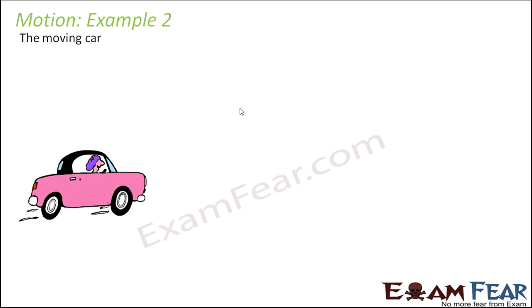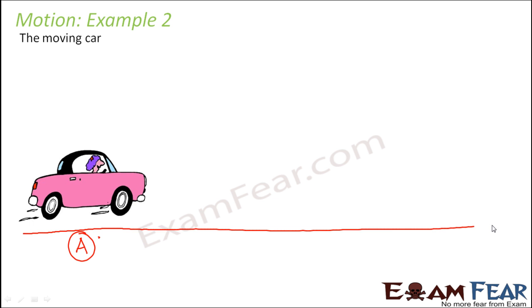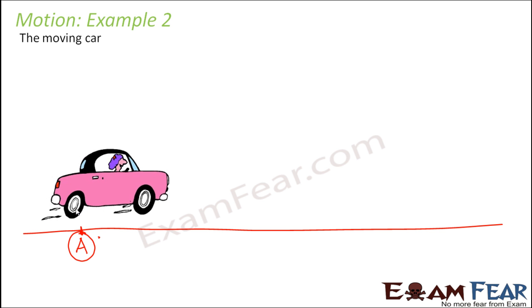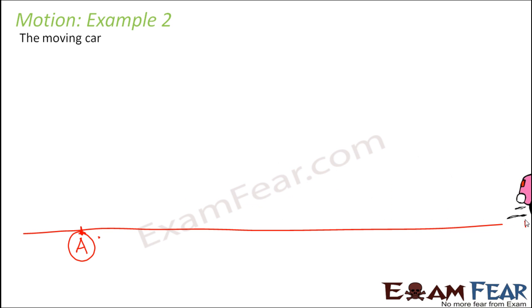Now let's take the example of a moving car — whether a toy car or a real car. When the car is at rest, it is at a particular position; let's say point A on the road. When the car starts moving, its position changes. Initially it was at A, and now it is somewhere at position B. With every second passing by, the position of the car is moving — first at A, then at various points — so we say the car is in motion.